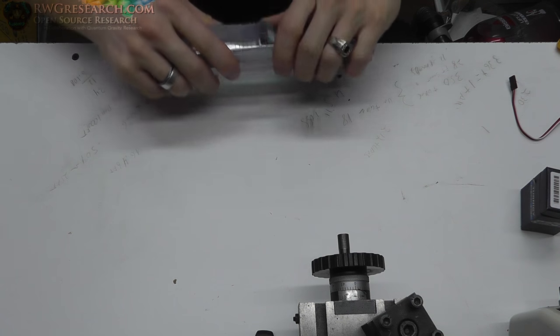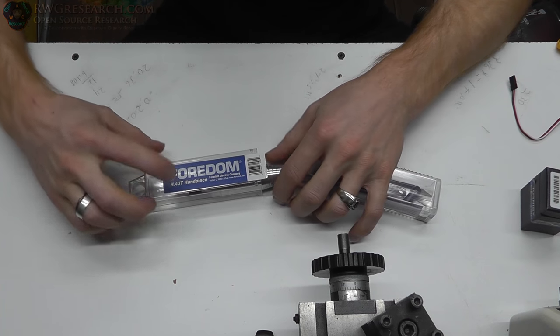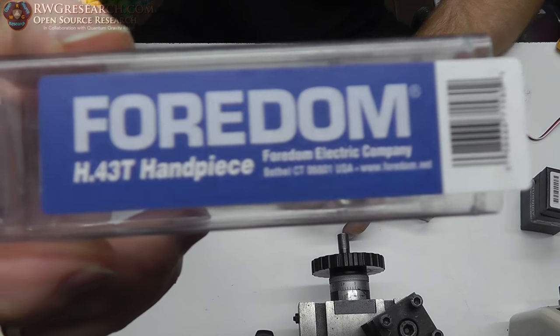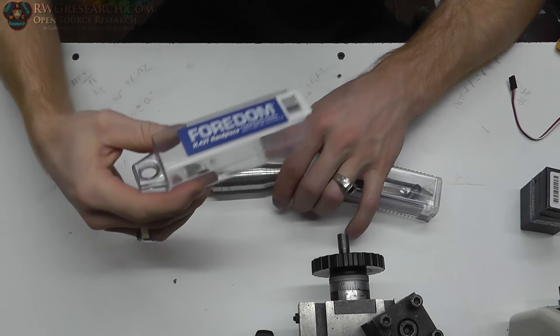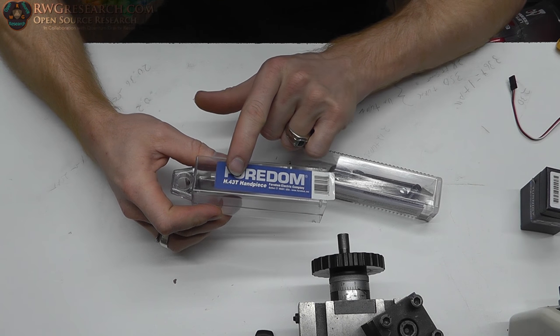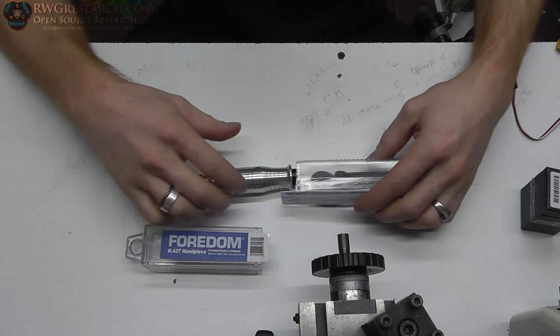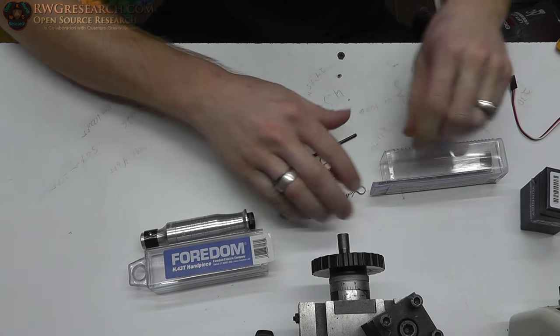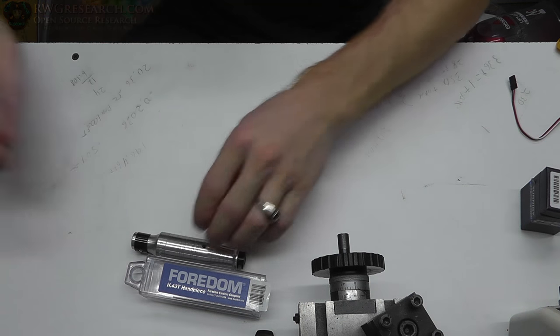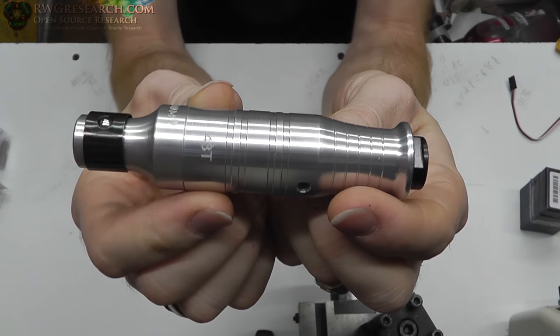Now, I looked for a while, and I found this. This is a particular handpiece for a rotary tool by this company. The number for it is H.43T, and they call that a handpiece. It comes with a couple of pieces, some collets, the tools to get the collets open. What we want to deal with right now is this. So this is what I came up with.